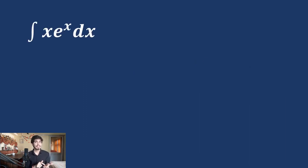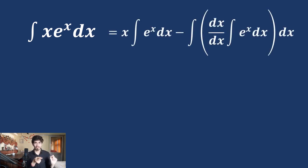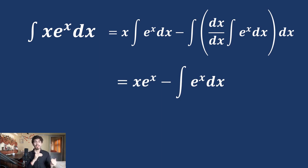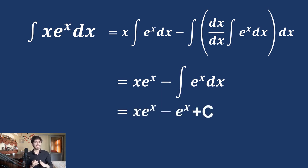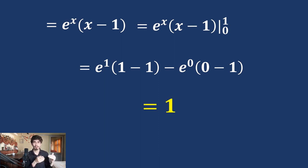Let's apply this to ∫x·eˣ dx. Here x is an arithmetic function and eˣ is exponential, so by ILATE, x is the first function and eˣ is the second. Applying the formula: x·(∫eˣ dx) − ∫(1 · eˣ) dx = x·eˣ − eˣ + c, or eˣ(x − 1) + c. For the definite integral from 0 to 1, just apply the limits — upper minus lower — which gives the value 1.